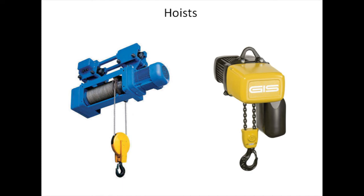Industrial trucks are more flexible than conveyors since they can move between various points and are not permanently fixed in any one place. They are therefore more suitable for intermittent production and for handling various sizes and shapes of material. There are many types of trucks — petrol driven, electric, hand powered, and so on. Their greatest advantage lies in the wide range of attachments available, which increases their ability to handle various types and shapes of material.